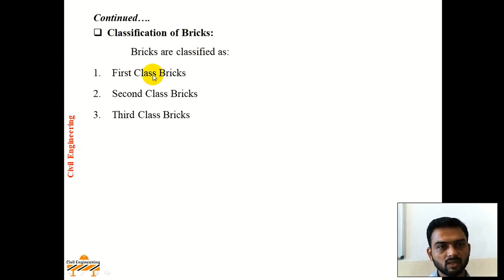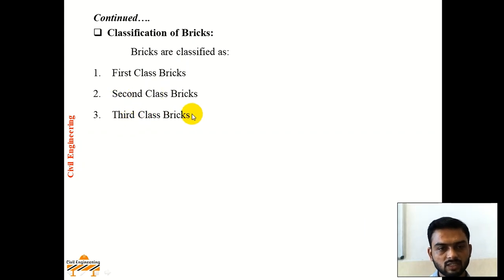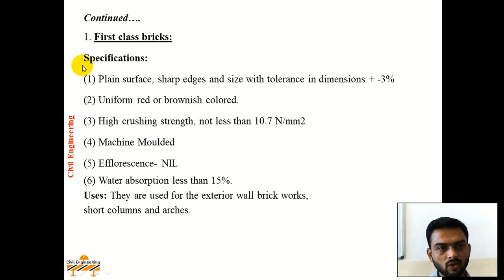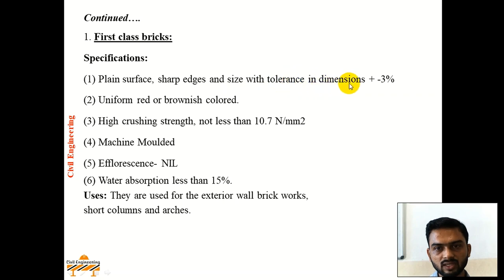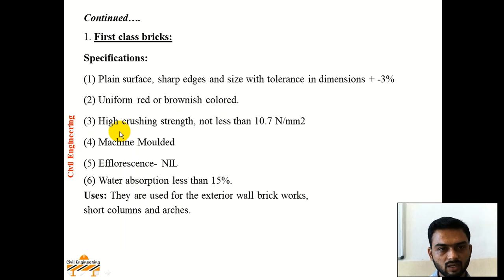Classification of bricks: 1st-class bricks, 2nd-class bricks, and 3rd-class bricks. 1st-class bricks have a plain surface, sharp edges, and size with tolerance in dimension up to ±3%. They are uniform red or brownish colored, with high crushing strength not less than 10.7 N/m².